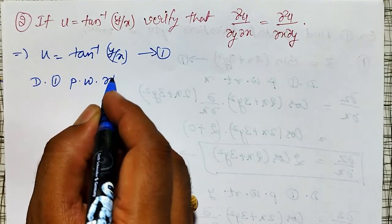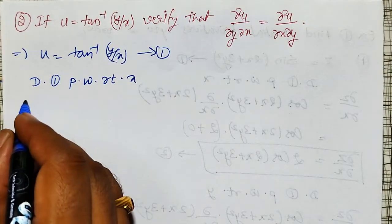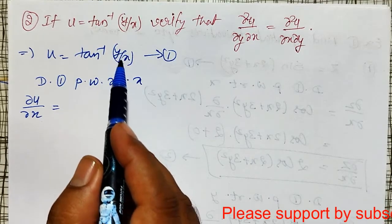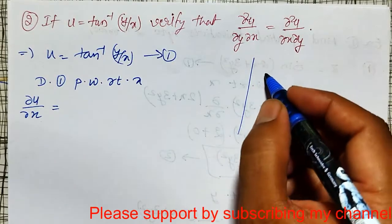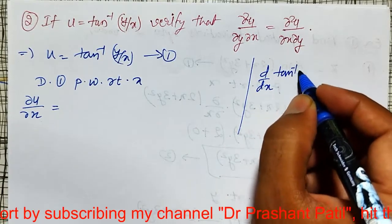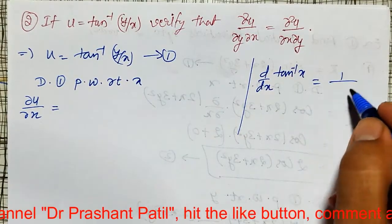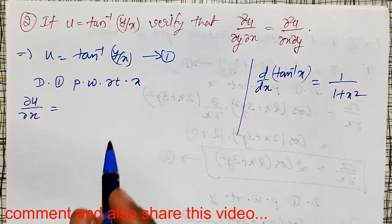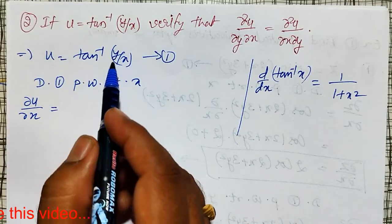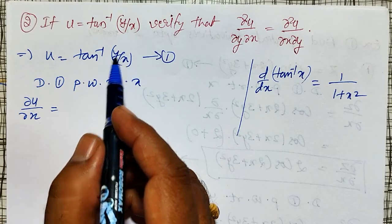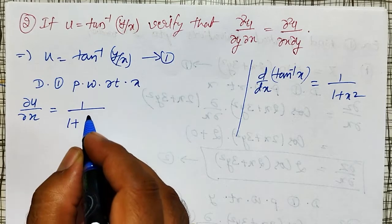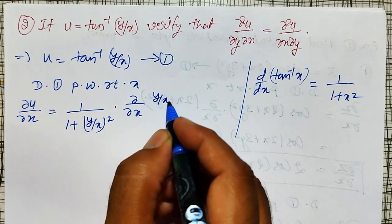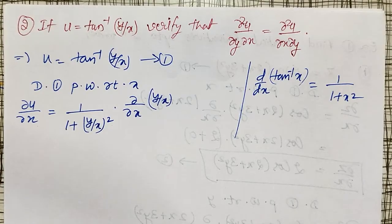Differentiating equation one partially with respect to x, I write ∂u/∂x. While differentiating partially with respect to x, y is kept constant, but the expression contains both x and y. The ordinary derivative d/dx of tan⁻¹(x) is 1/(1 + x²). Applying the chain rule, this becomes 1/(1 + (y/x)²) into ∂/∂x of (y/x).